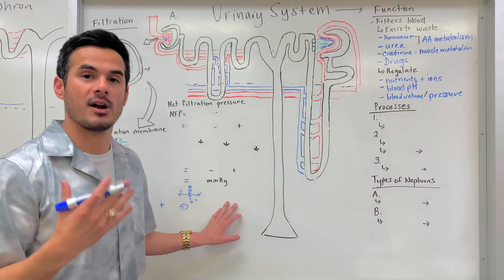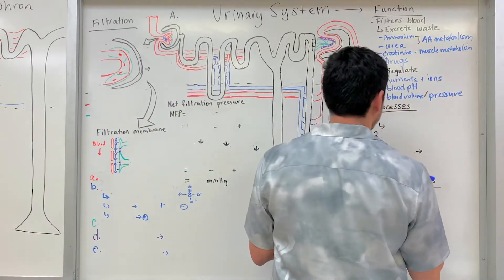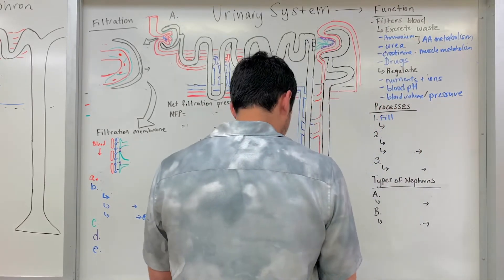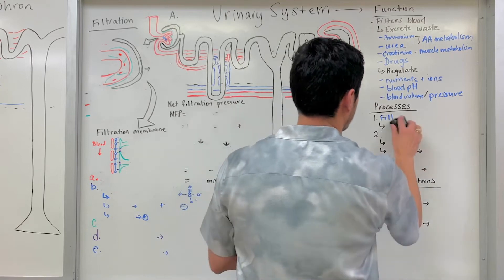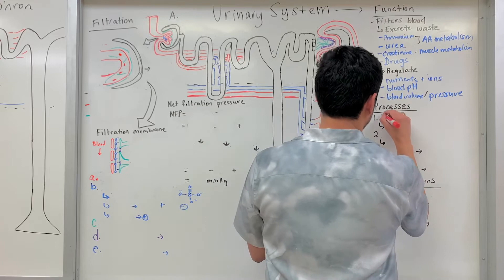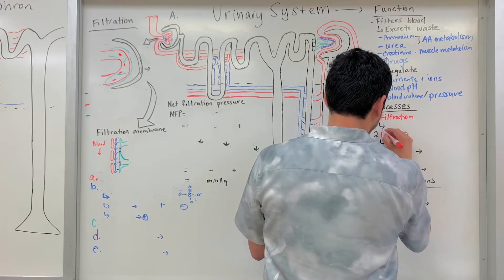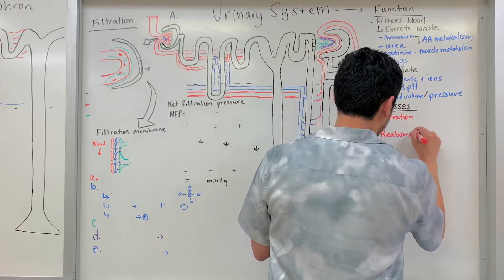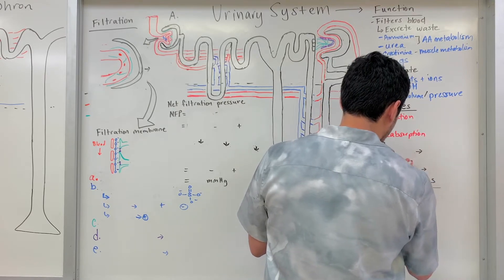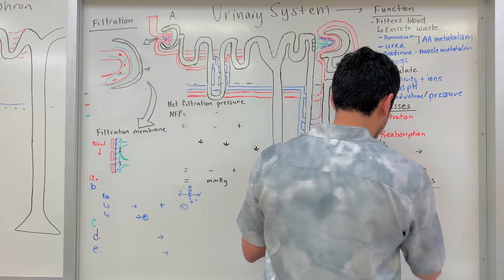Let's discuss some of the different processes that occur in order for urine to form. These processes include filtration, tubular reabsorption, as well as tubular secretion.